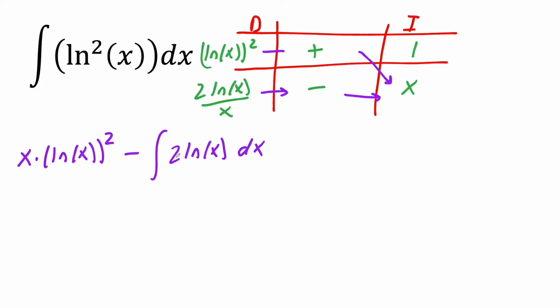So I get the integral of 2·ln(x) dx. I can move the 2 to the front. At this point I'm going to use the tabular method on this part, so we're going to do another table.